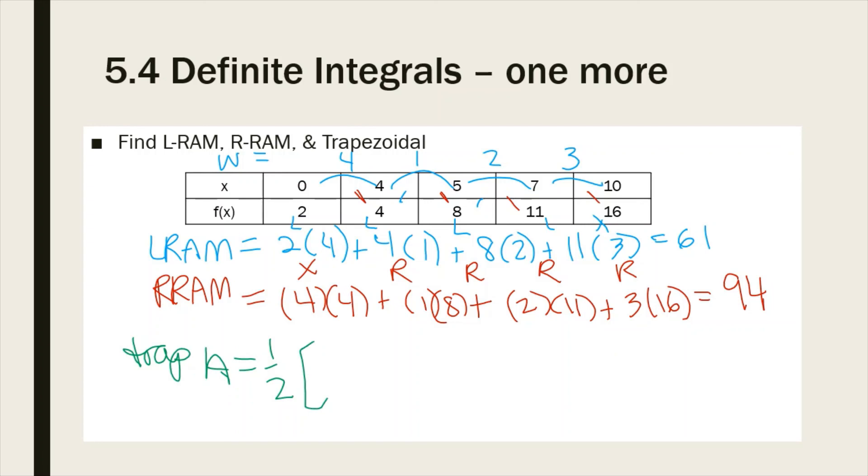And then we're going to do the trapezoid: one half times 4 times (2 plus 4), plus 1 times (4 plus 8), plus 2 times (8 plus 11), and then 3 times (11 plus 16).